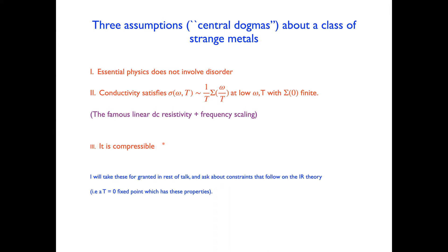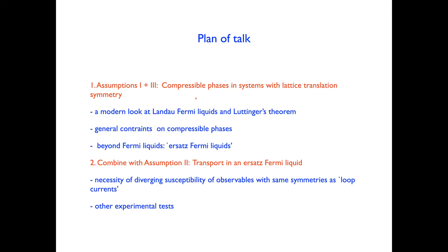That's the experimental evidence supporting these assumptions. In the rest of the talk, I'll take these assumptions as given and explore the constraints that follow on the IR theory. The plan is: first, think about Fermi liquids and Luttinger's theorem; then think generally about compressible phases; and towards the end, combine our understanding of compressible phases with the assumption of conductivity scaling. This leads to a number of statements about transport in a system satisfying these assumptions, and some very concrete experimental predictions — without specifying a detailed theoretical model.